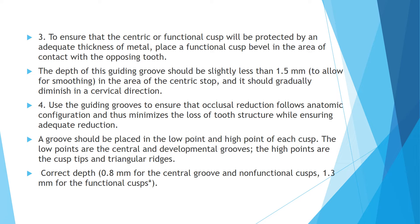The depth of the guiding groove should be slightly less than 1.5 mm so that when the grooves are merged they look even. Guiding grooves ensure that occlusal reduction follows the anatomical configuration — the tooth must be reduced to a miniature form of the same anatomy. A groove should be placed at both the low point and the high point of the cusp, in two angulations.